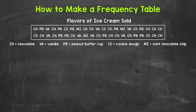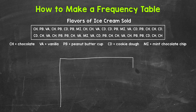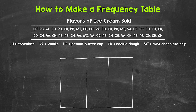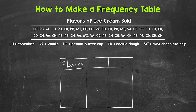Let's make a frequency table to organize this data. We have five flavors that we need to include. So let's draw this table. I'll start with three columns and a row up top for the column headers — the column labels. The first column is the flavors column, the second or middle column is the tally column, and the third column on the right is the frequency column.